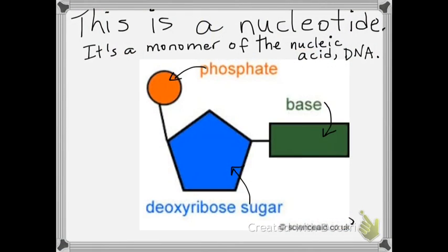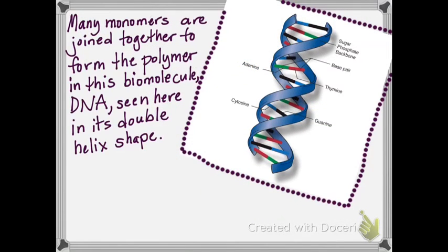This is a nucleotide. It's a monomer of the nucleic acid DNA. Many monomers are joined together to form the polymer in this biomolecule DNA, seen here in its double helix shape.